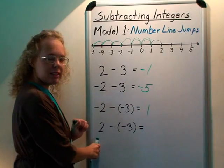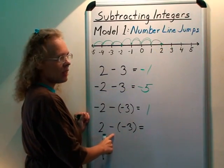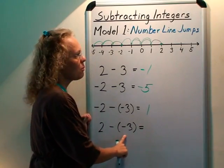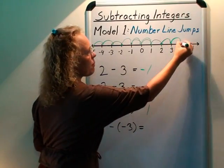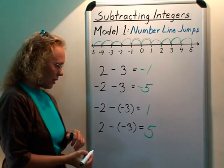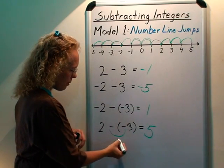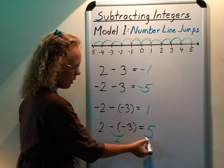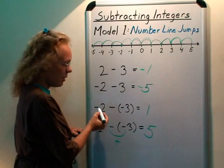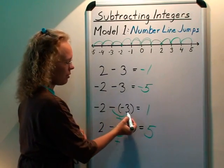Similarly here you would start at 2. This minus would mean okay we're moving left. This minus would reverse it, move right three steps, land at 5. And you might want to note to students that these two minuses, it is as if they make a plus. 2 plus 3 equals 5. Similarly here minus 2, it is as if minus 2 plus 3 equals 1.